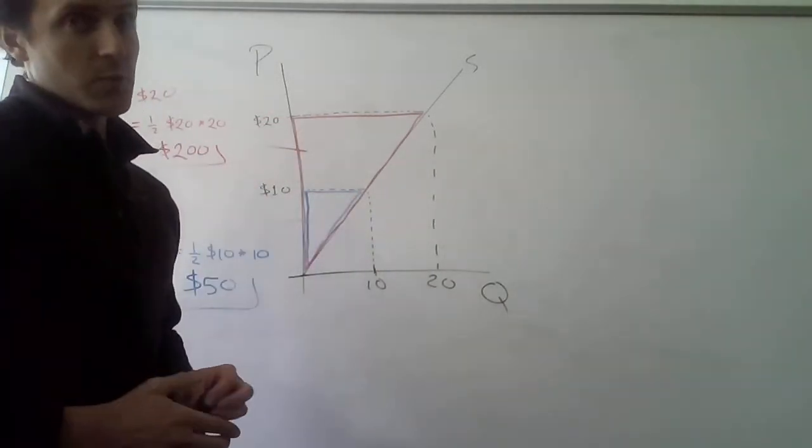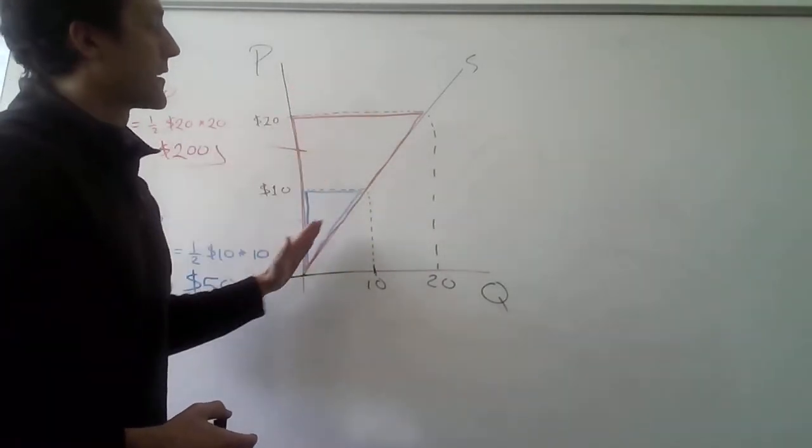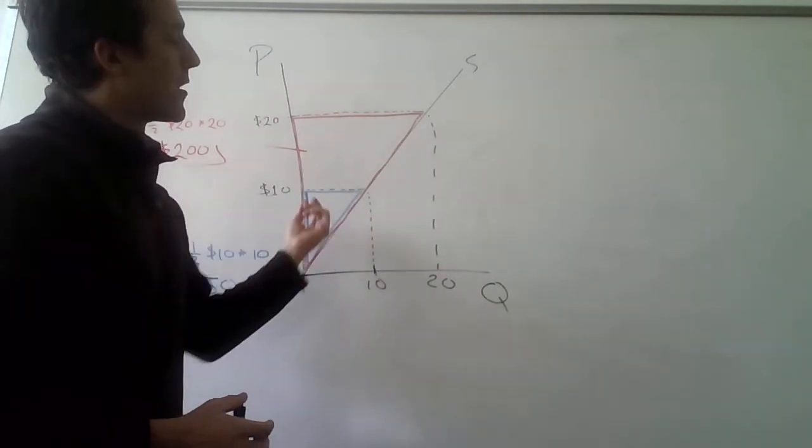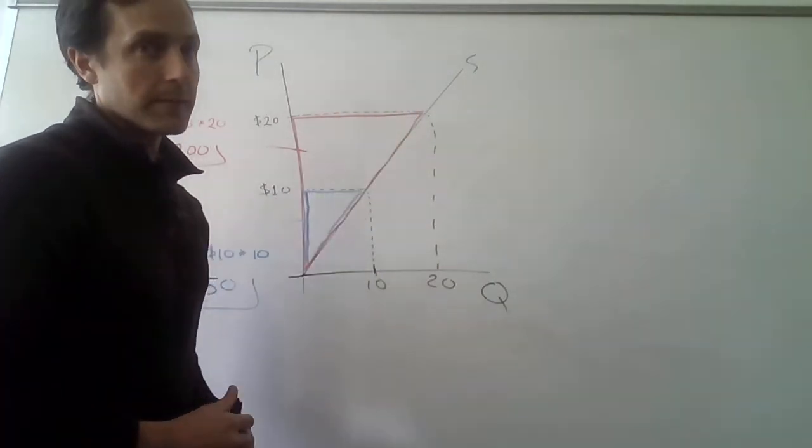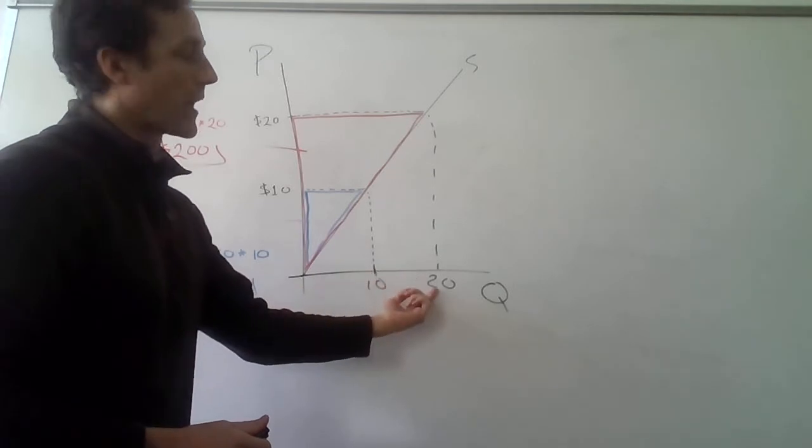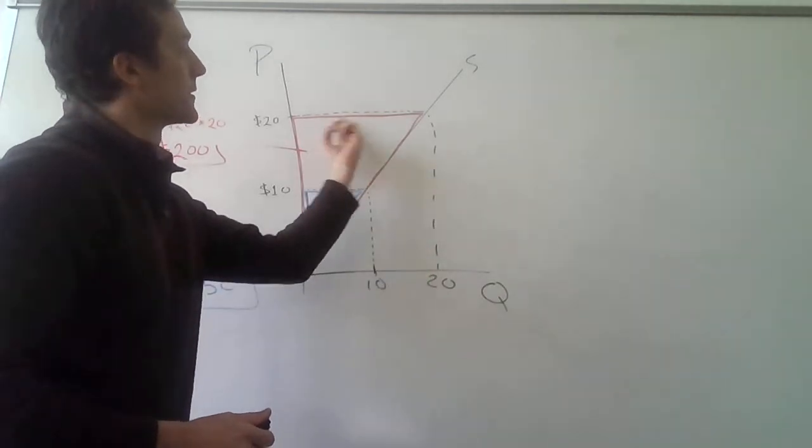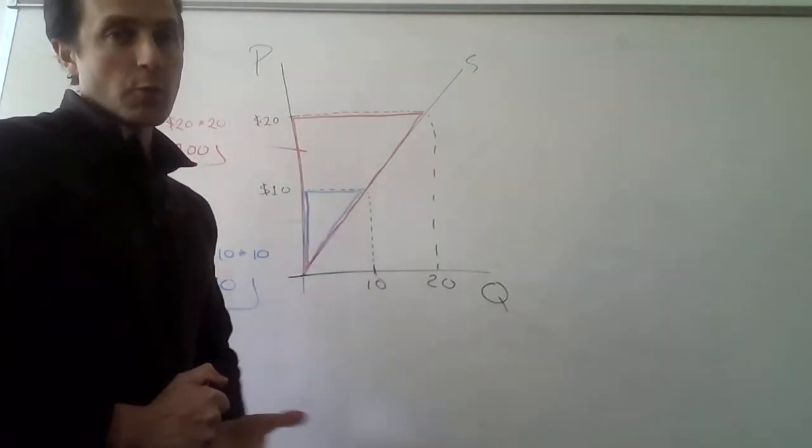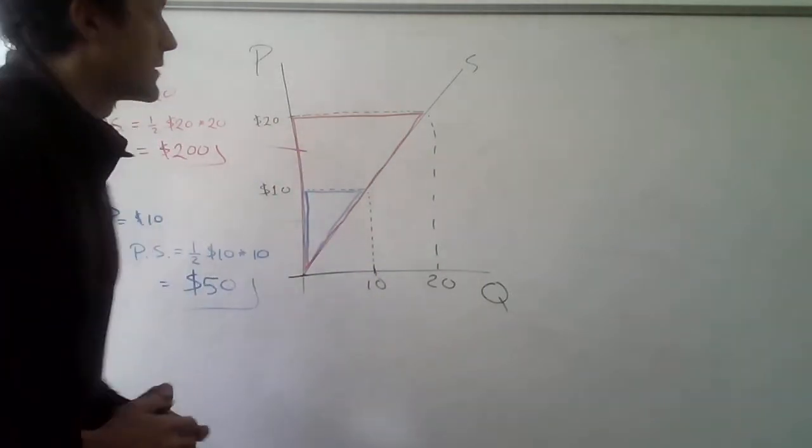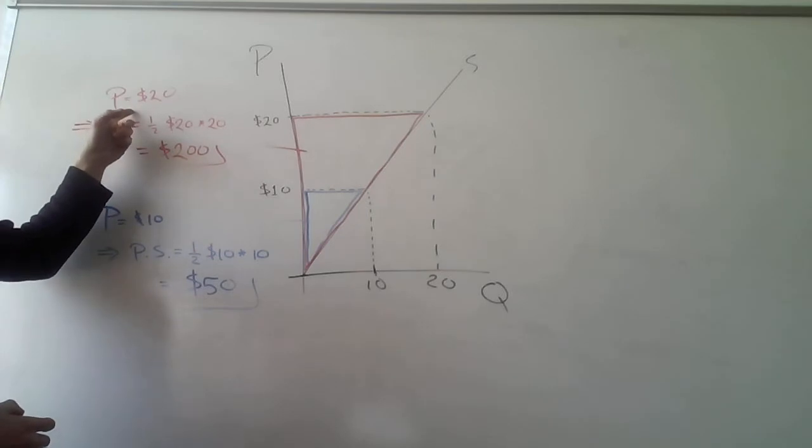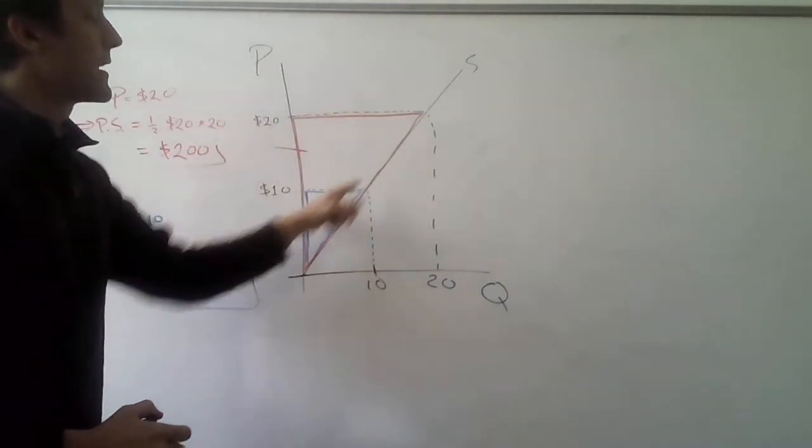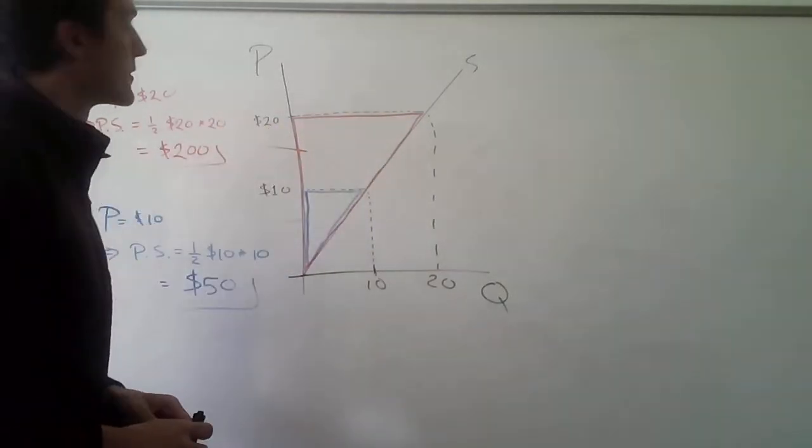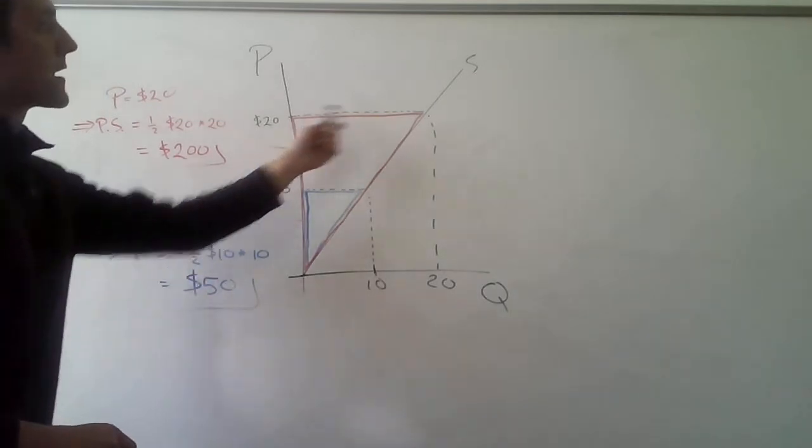So again, the producer surplus is everything below the price and above the supply curve, all the way up to the quantity that's supplied, right? So they're going to supply 20 units when the price is $20. And so this triangle outlined in red, that will be the producer surplus when the price is 20, right? So when the price is 20, the producer surplus is the red triangle, the triangle outlined in red. And the area of that triangle,